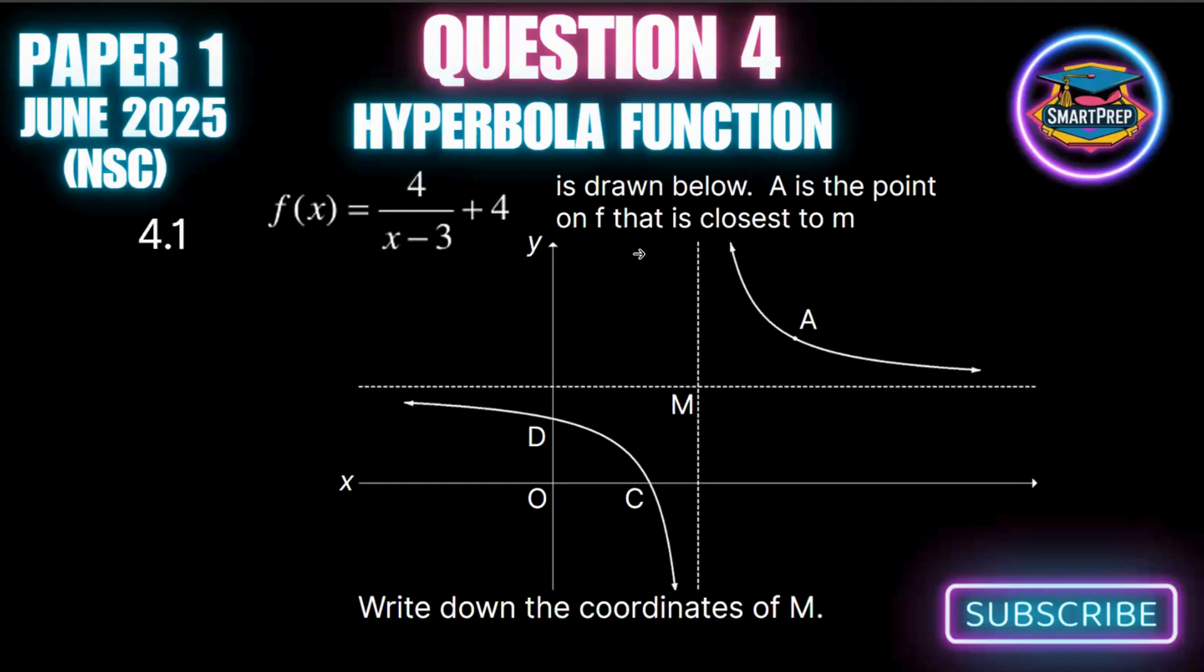Question 4 is a hyperbola function: f(x) equals 4 over x minus 3 plus 4. The question asks for the coordinates of M. The coordinates of M is where the two asymptotes meet. For x minus 3, we have an asymptote of x equals 3. For the plus 4, that means we have an asymptote of y equals 4. So we know the value of M is therefore y equals 4, and the x value is 3. The coordinates of M are (3, 4).